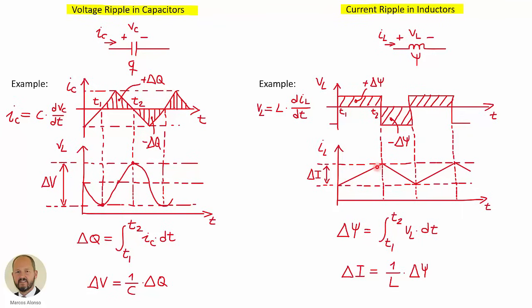In this case, the ramp is positive because the voltage is positive, and in the other case, because the voltage is negative, we have a negative ramp for the current. We are interested in the peak-to-peak ripple of the current through the inductor. We can calculate this peak-to-peak ripple by doing 1 over L times the increment of the flux linkage, which can be calculated using this area here, obtained from the integral as shown.